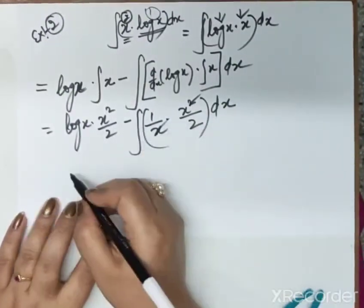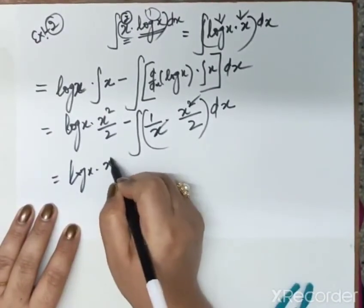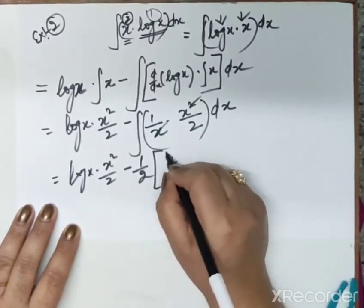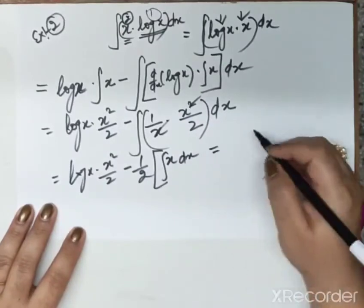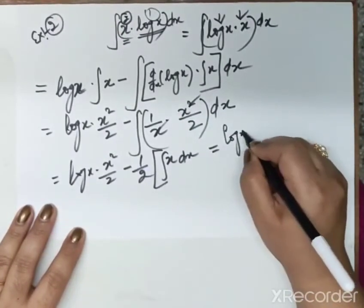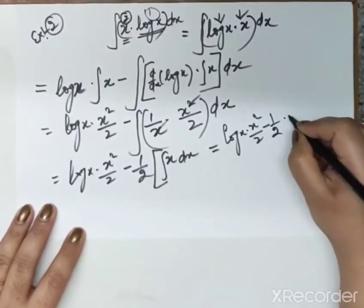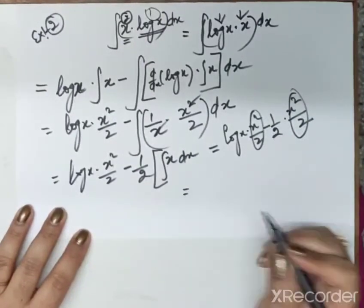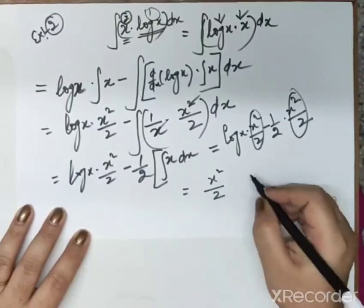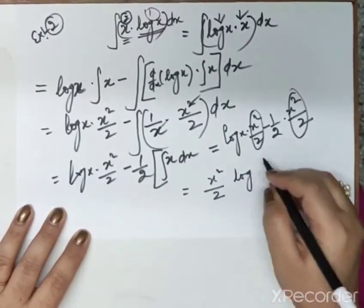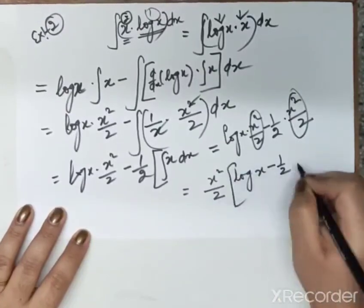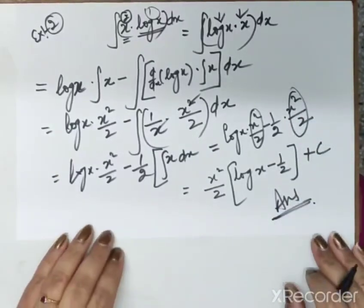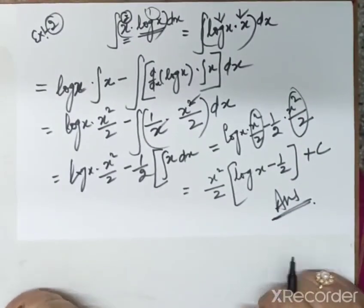The x's cancel — one x from (1/x) and one from x² — leaving (1/2) ∫ x dx. This gives log(x) · (x²/2) − (1/2) · (x²/2). Taking x²/2 common: (x²/2)[log(x) − 1/2] + c. This will be our answer. This is the way to solve integration by parts.